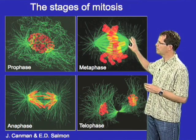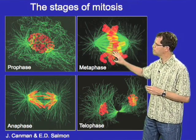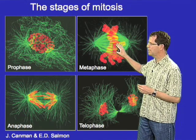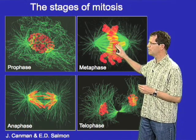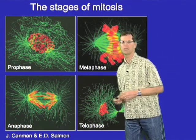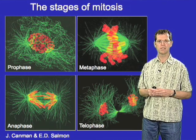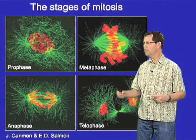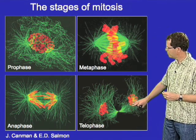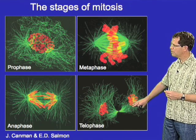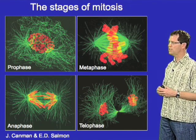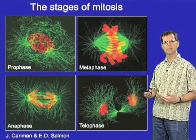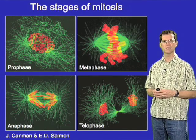Then the big event of mitosis occurs: the chromosome cohesion mechanisms that hold those sister chromatids together are removed, resulting in the separation of the sister chromatid pairs and their movement to opposite poles of the mitotic spindle. After that, in telophase, those separated chromosome sets are packaged into individual daughter nuclei, after which cytokinesis takes care of dividing the cell itself.